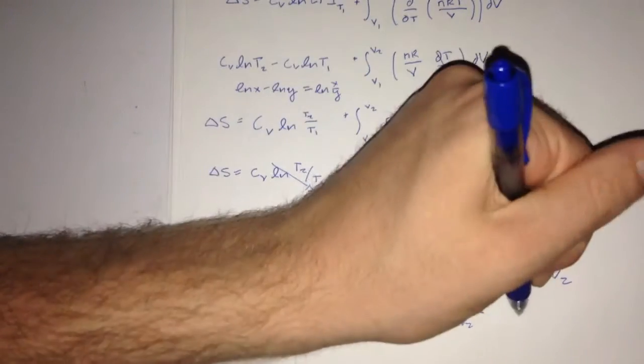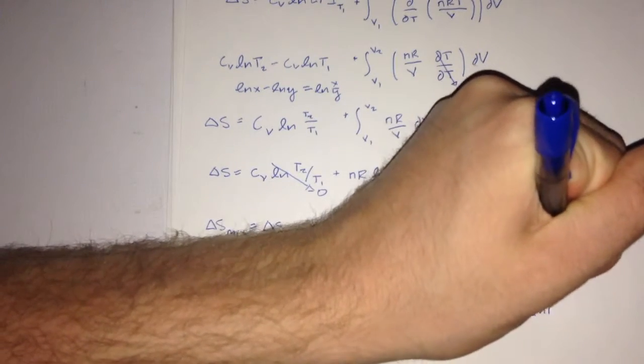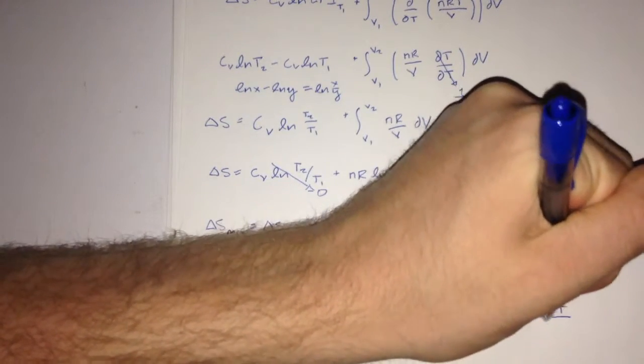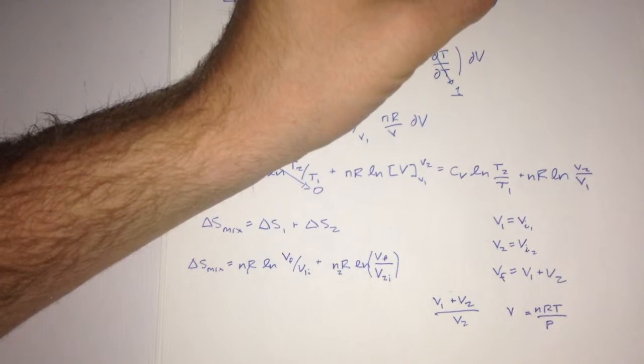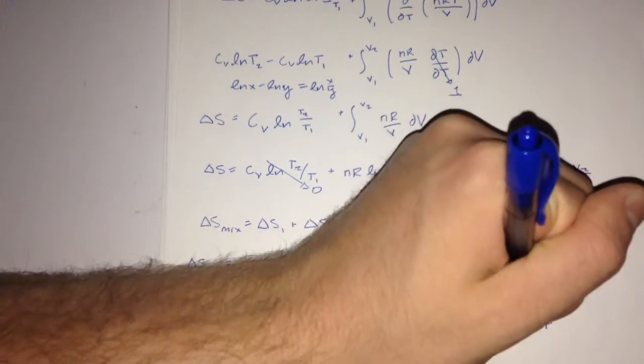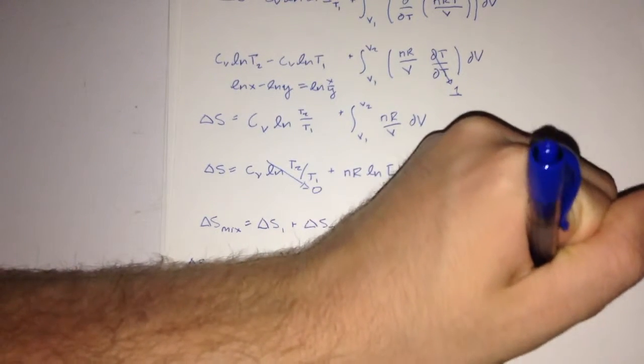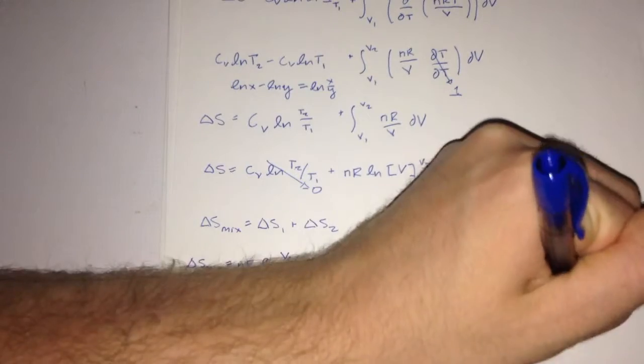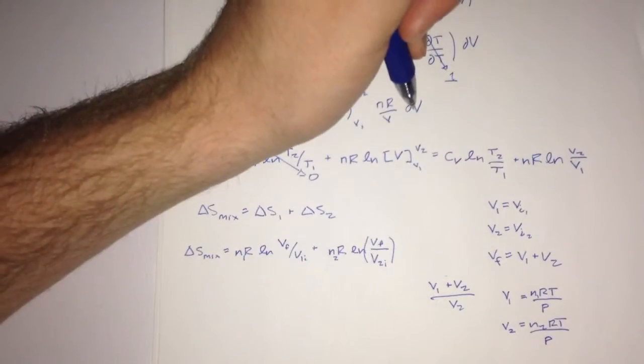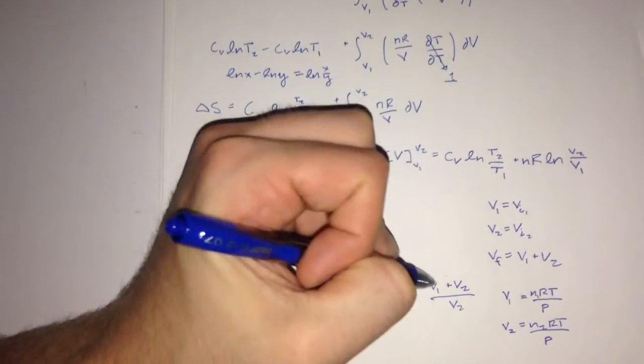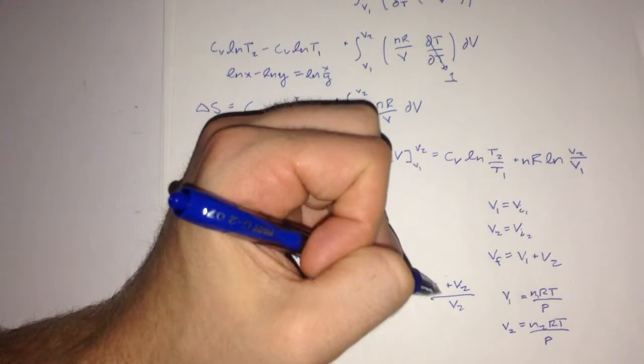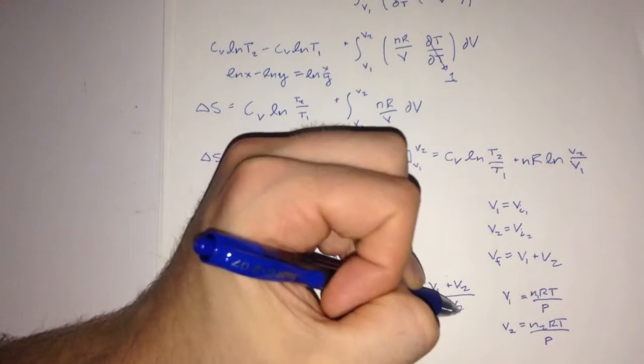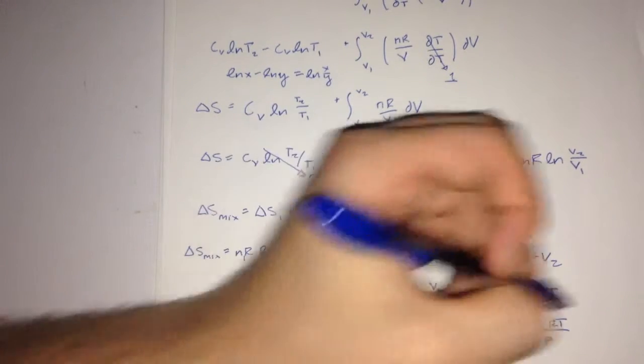And additionally, we know that the volume is equal to nRT over P. And we can do that for both of the gases in their initial states. Then using simple algebra, we can combine these two terms and write one in the bottom to get this.